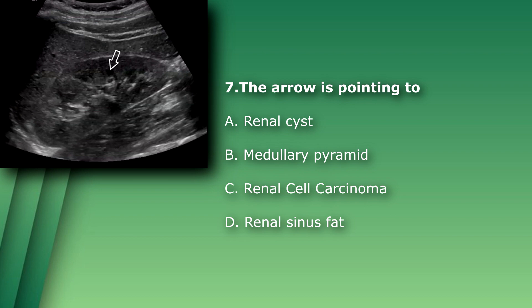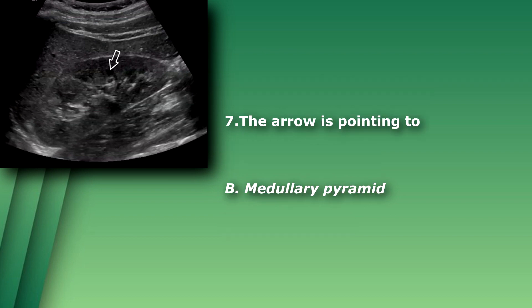Question 7: The arrow is pointing to: A) renal cyst, B) medullary pyramid, C) renal cell carcinoma, or D) renal sinus fat. In this image you see a normal kidney, so there is no renal cell carcinoma. You don't see any anechoic circular structure, so there is no renal cyst. The arrow is pointing to a hypoechoic area — the medullary pyramids are usually hypoechoic to the renal cortex. The renal sinus is usually echogenic. The answer is B) medullary pyramid.